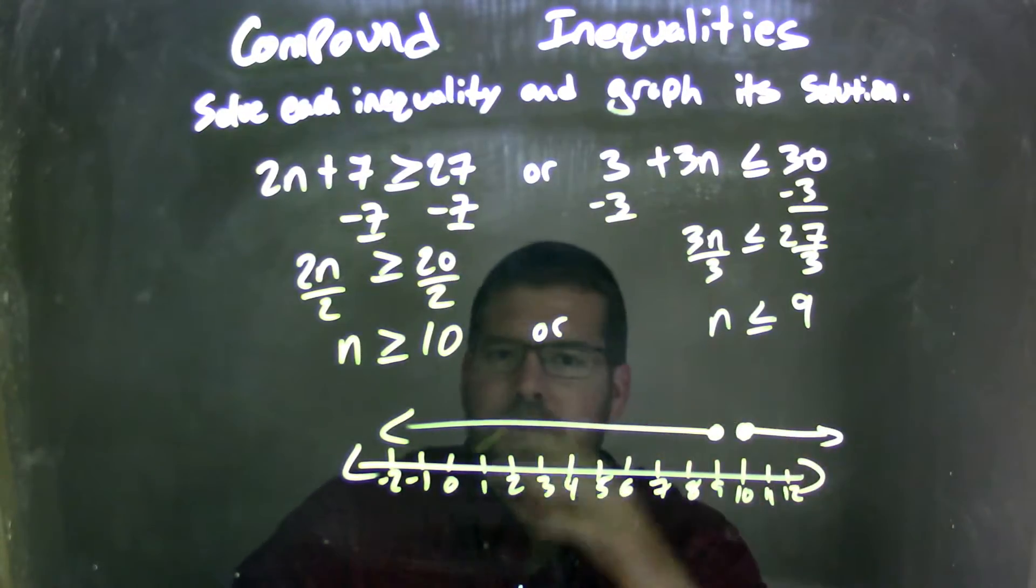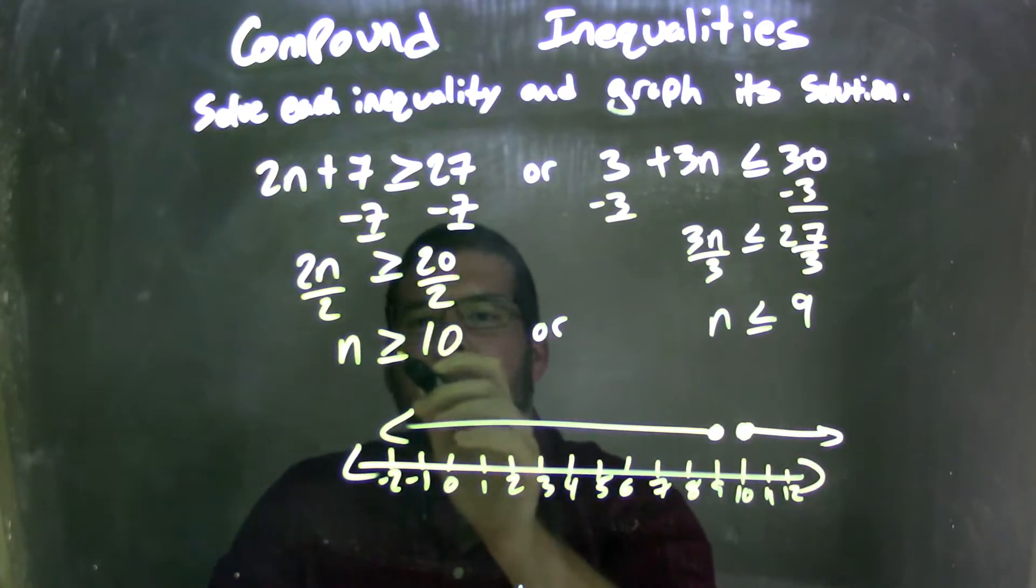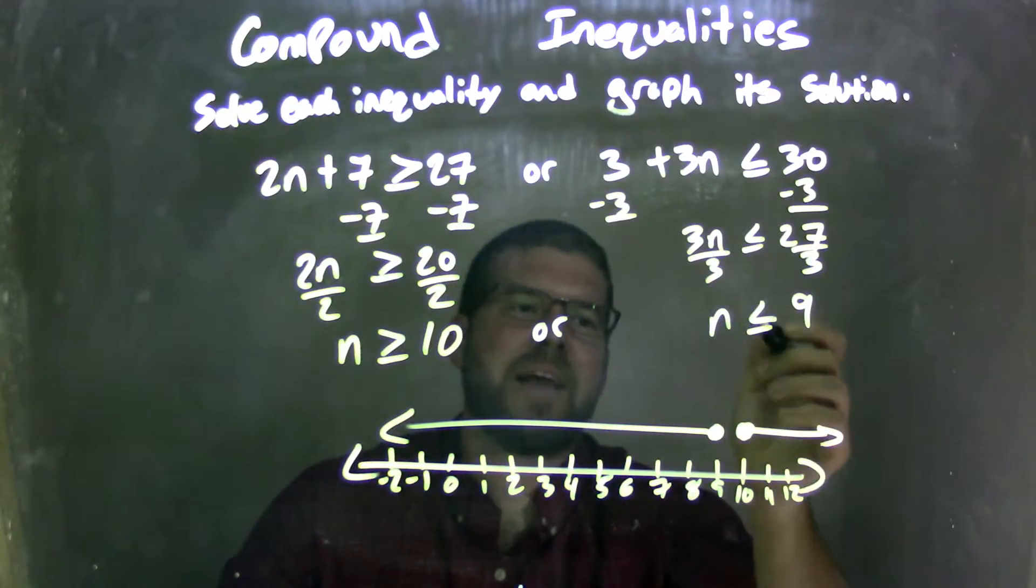Now I have my graph here, which represents all values that n can be. And those values are n can be greater than or equal to 10, or n can be less than or equal to 9.